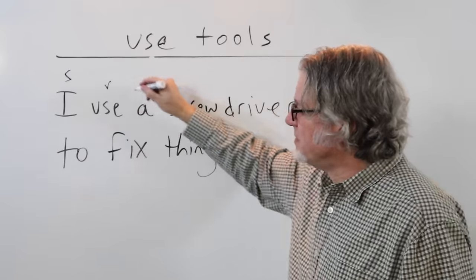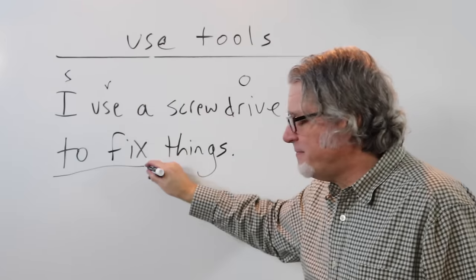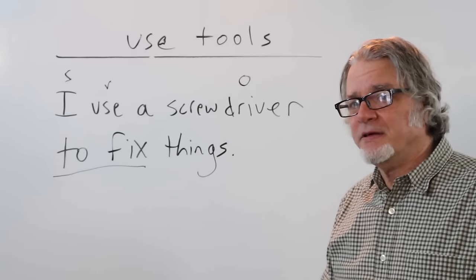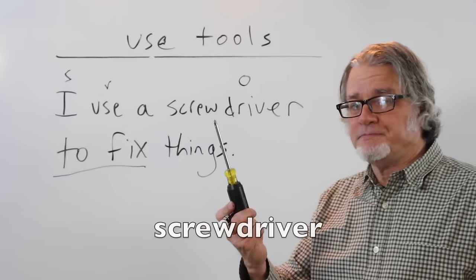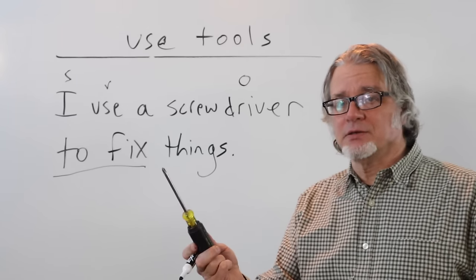This is the subject. Here's the verb. This is the object. And then here is an infinitive. And then here is the object of the infinitive. Here's a screwdriver. I use a screwdriver to fix things.